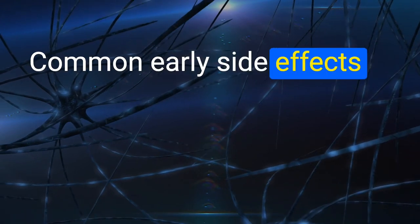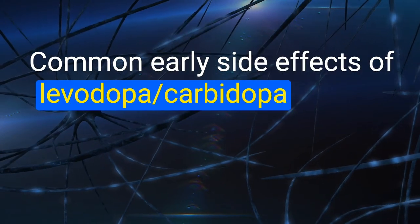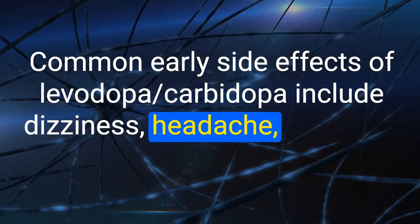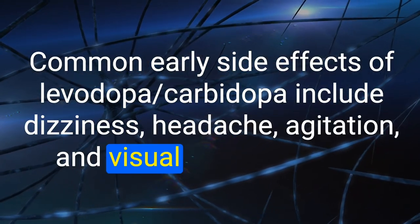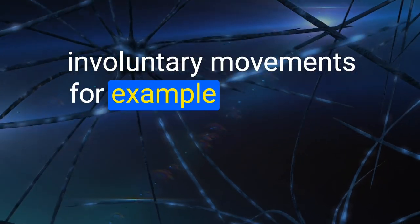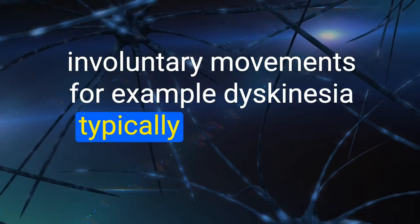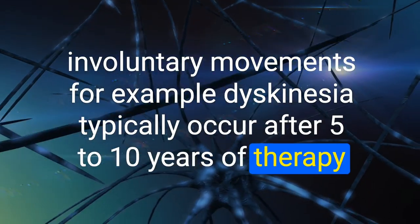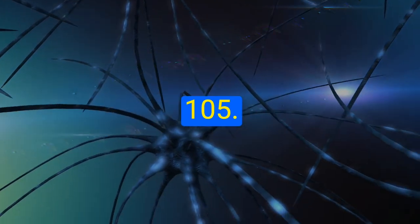104. Common early side effects of levodopa/carbidopa include dizziness, headache, agitation, and visual hallucinations. Involuntary movements (e.g., dyskinesia) typically occur after 5 to 10 years of therapy.